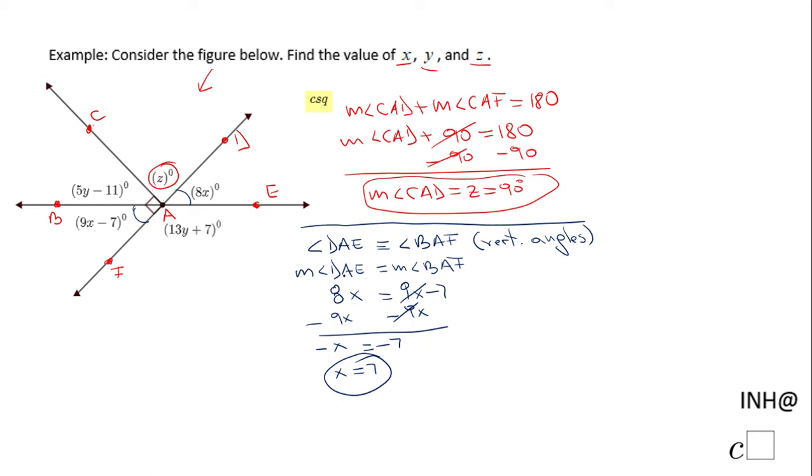And now we have one more variable to find, which is y. We notice we have y here or y here. I think I'm going to use this expression 3y plus 7, because if you take a look, this angle and this angle here are supplementary because they form a line. The measure of angle DAE plus the measure of angle EAF equals 180 degrees.